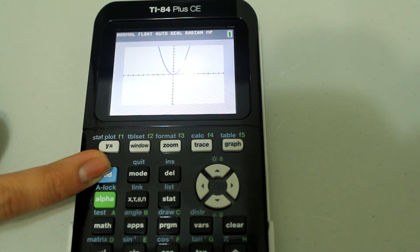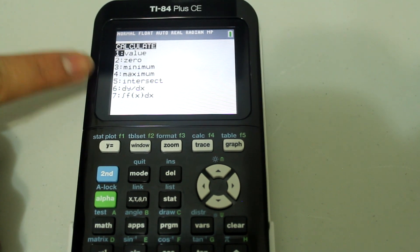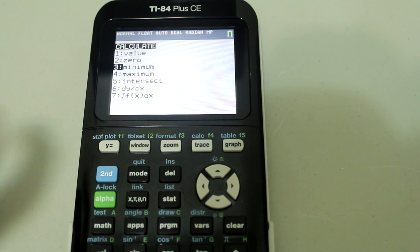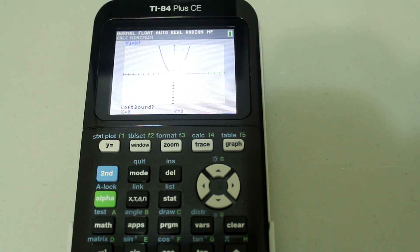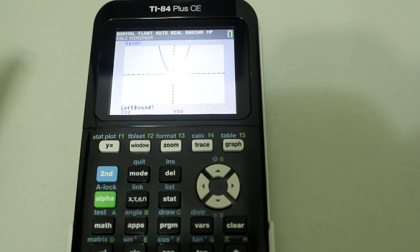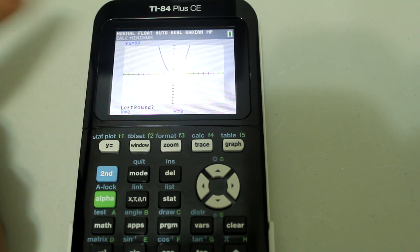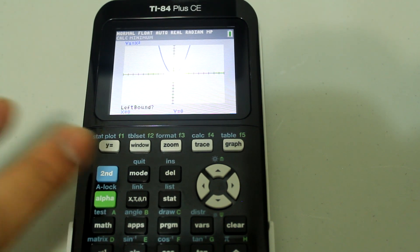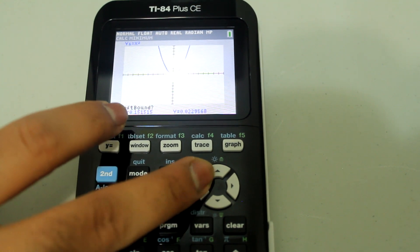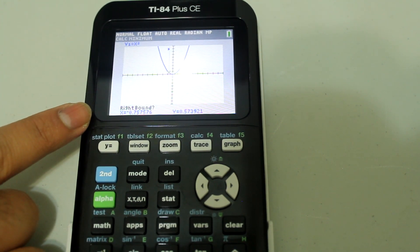What you want to do is hit second and then when the arrow shows up in the corner you want to hit trace and you want to go down to minimum. You can use the arrow buttons right here to go down to minimum but what I like to do is the minimum is number 3 so I just hit number 3 and it takes me to the minimum setting. So now, we're back at the graph and notice in the bottom it says left bound with a question mark. So what you want to do is find the point where the minimum is most probably located. Now I want to go just a little bit to the left of that using the arrow buttons and then I want to hit enter and now it says right bound with a question mark.